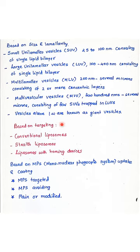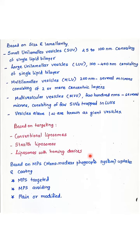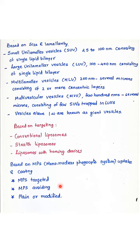Liposomes can also be classified based on the site to which they are targeting. Conventional liposomes do not have any modification. Stealth liposomes are modified by coating their surface with an agent such as polyethylene glycol to hide them from immune cells. Liposomes can also have homing devices such as antibodies attached to their surface, converting them into targeted carriers for particular tissue sites, cells or organs. Based on their exposure to the mononuclear phagocytic system, liposomes can be classified as plain, MPS-targeted, or MPS-avoiding.